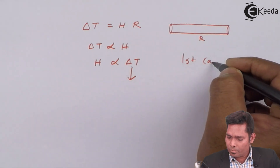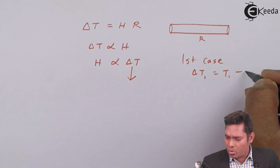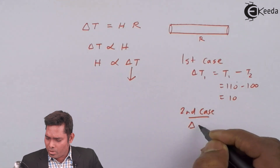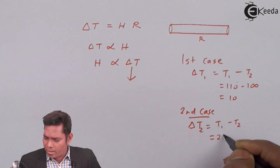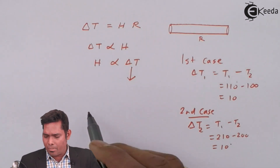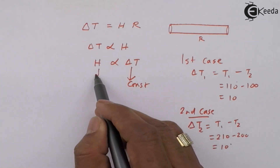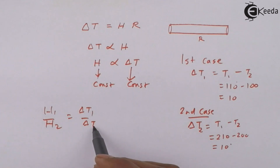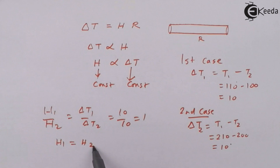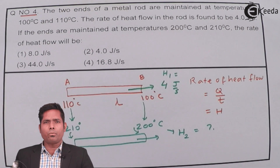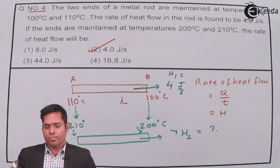The heat flow depends on the temperature difference, not on the temperature of one end or the other. In the first case, the temperature difference is 110 minus 100, which is 10 degrees. In the second case, the temperature difference is 210 minus 200, which is also 10 degrees. Because the temperature difference is the same, H1 equals H2. So H1 over H2 equals delta T1 over delta T2, which is 10 by 10, which is 1. Therefore H2 equals H1 equals 4 joules per second. That is the answer.